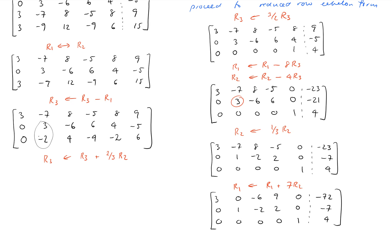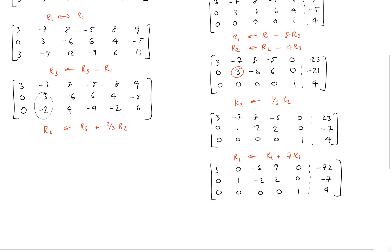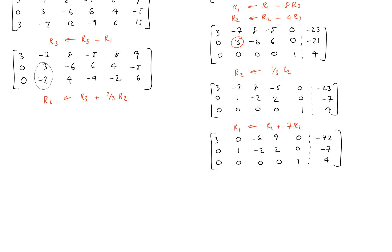And the last thing we have to do is just to rescale row one so that its pivot is a one. And then we've hit reduced row echelon form. And in this case, it'll be multiplying by a third. So we get 1, 0, negative 2, 3, 0, negative 24. Second row: 0, 1, negative 2, 2, 0, negative 7. Bottom row: 0, 0, 0, 0, 1, 4.